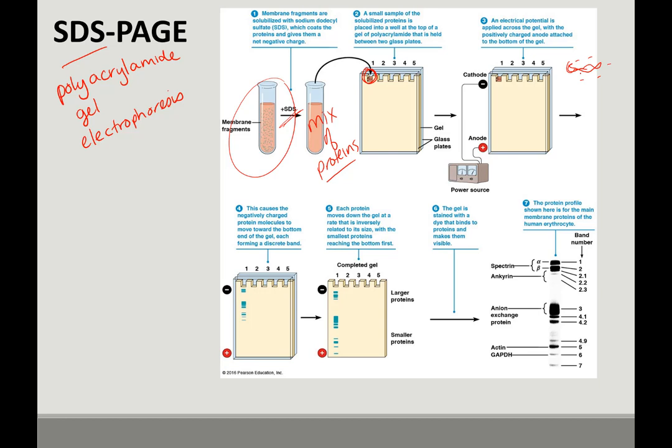And the proteins are all going to have a negative coating on them, and so they're going to move towards the positive anode, the positive charge. And what happens is they move and separate based on size. The bigger proteins move slower, the smaller proteins move faster. So the smaller proteins are at the bottom of the gel, and the larger proteins are at the top, and so we always show gels top to bottom.